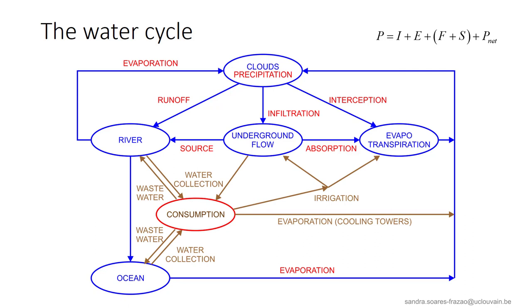We can add the human consumption and their interaction with the natural fluxes to the diagram. Consumption represents all human activities that need water or release water to the ecosystem. Water is collected from rivers, underground flows and oceans and is then released as wastewater, irrigation water or evaporation from cooling towers, for example.